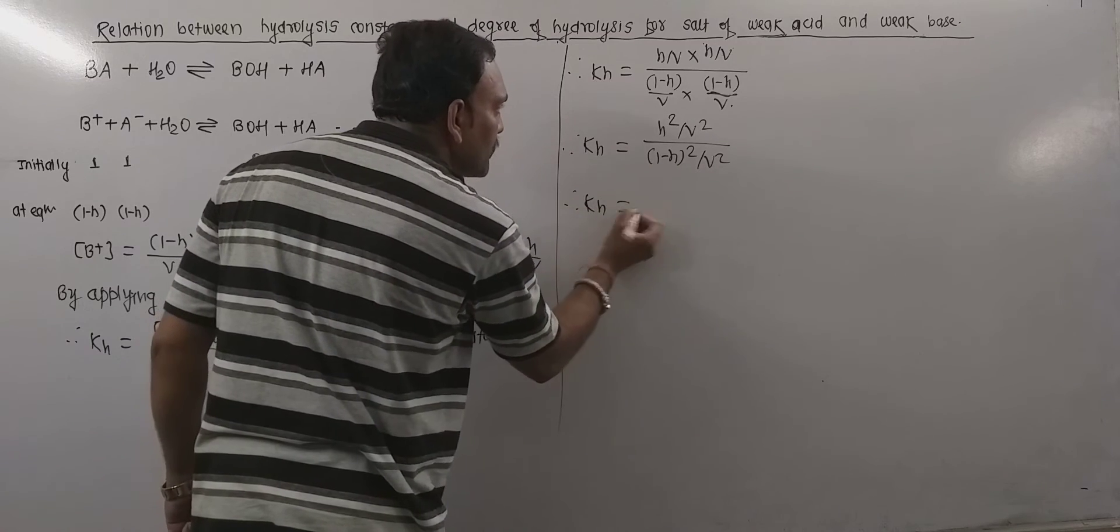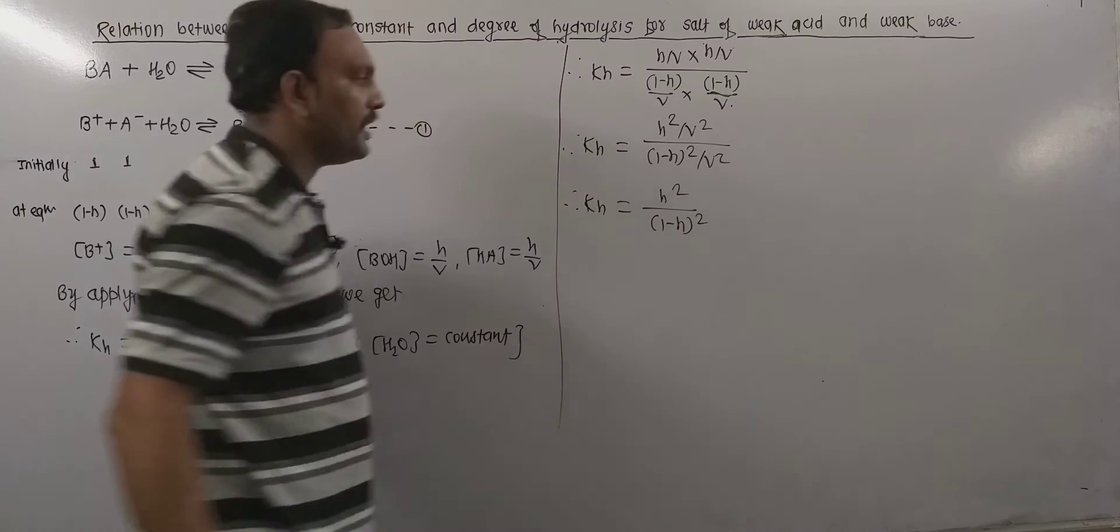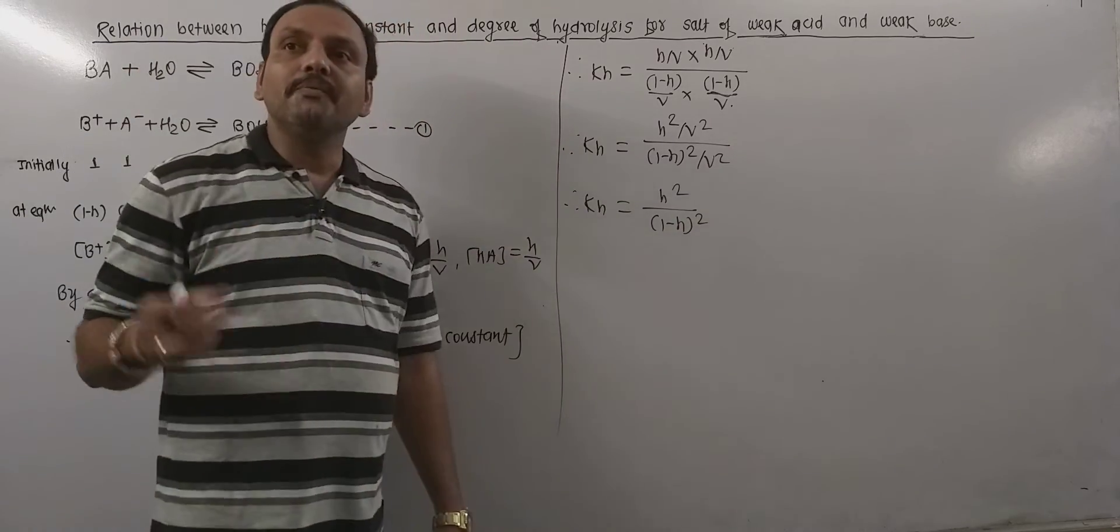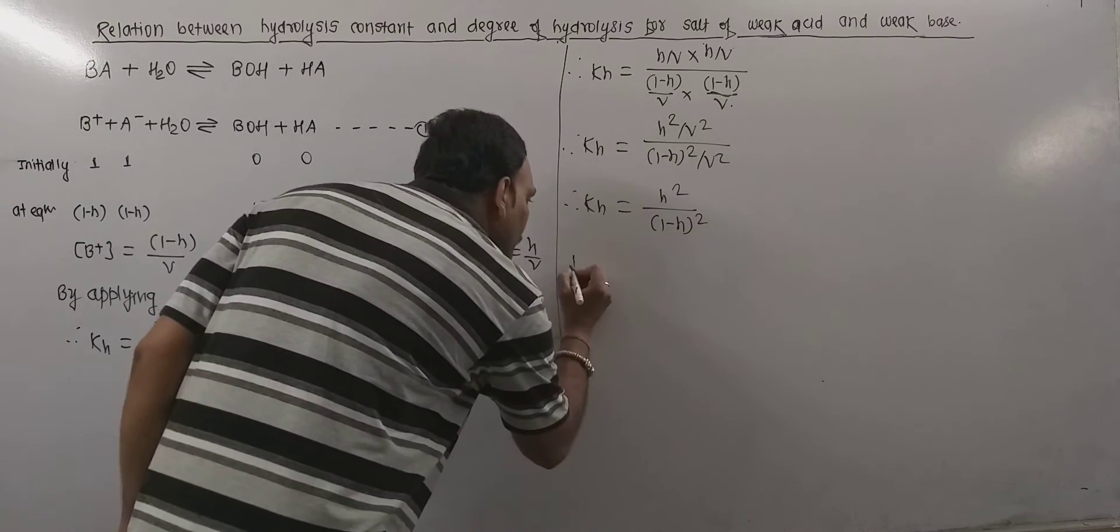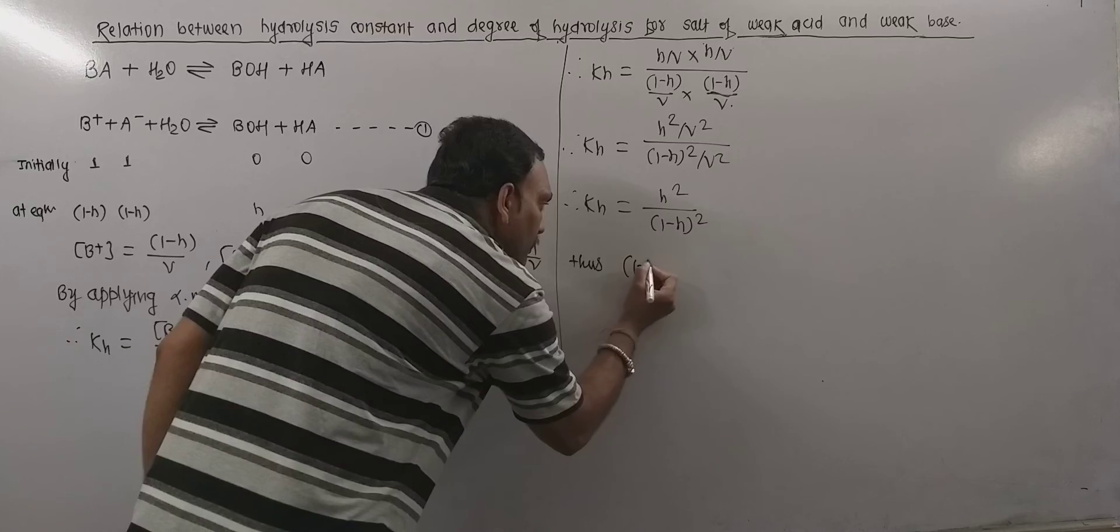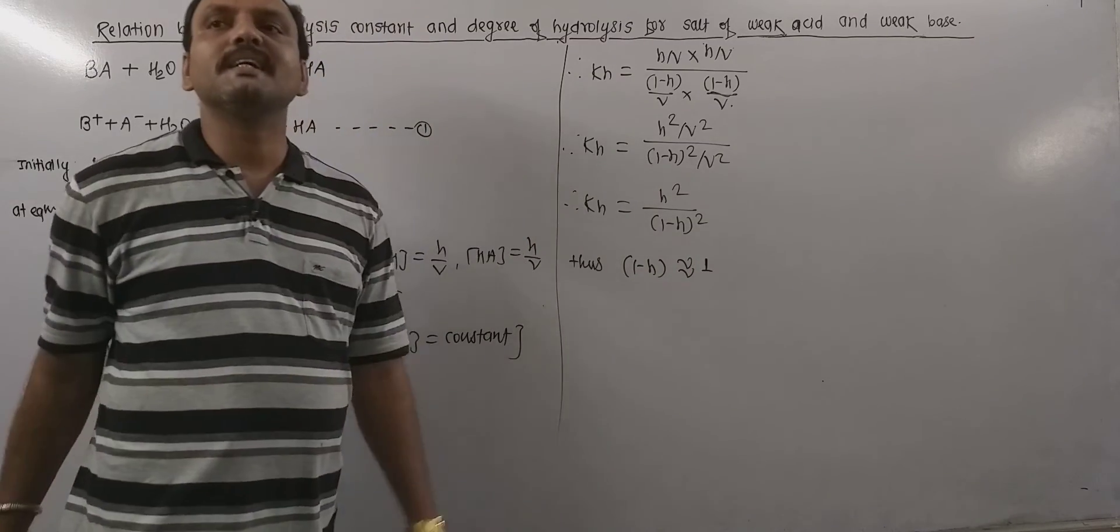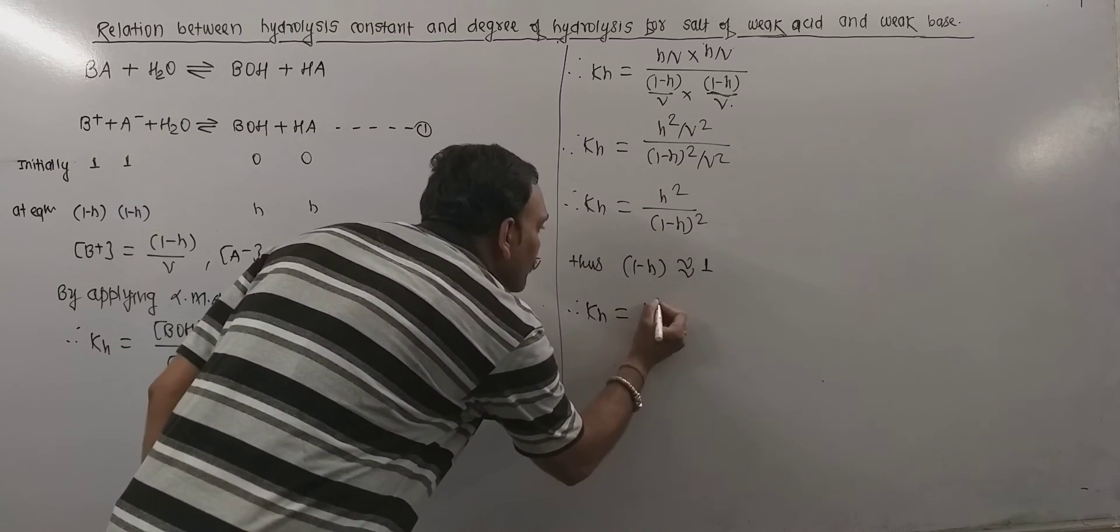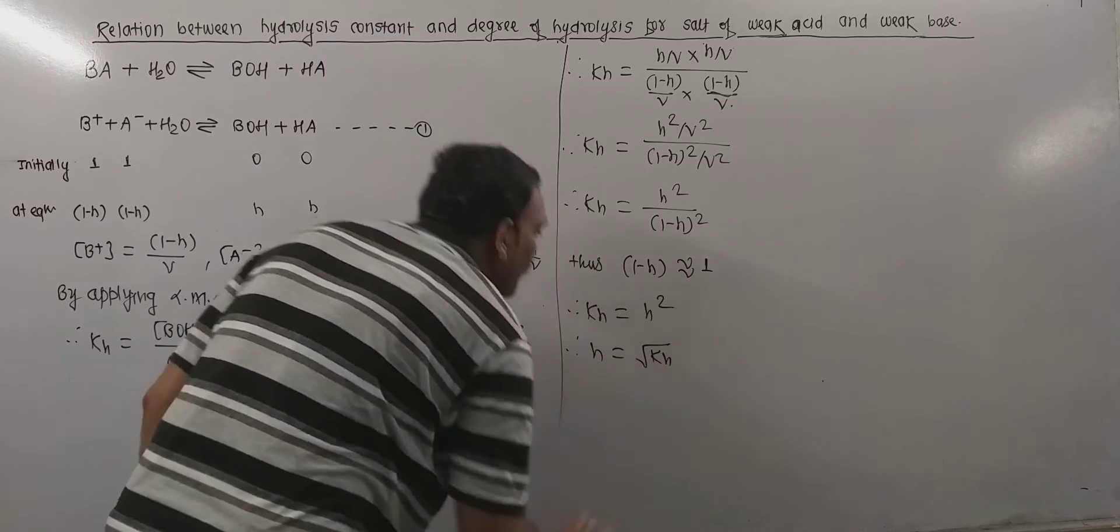Now we know that H is very, very small as compared to 1. Thus (1-H) is practically considered as 1. Thus this equation becomes KH equals H² and H equals square root of KH.